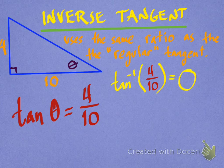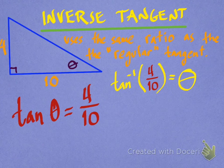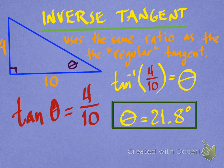And once you do that, that's going to give you the measure of theta. In this triangle here, theta equals 21.8 degrees, because that's what the calculator says the inverse tangent of 4 over 10 is. It's that simple. All you have to do is pretty much set up the equation, and your calculator does all the work. Let's try another one.